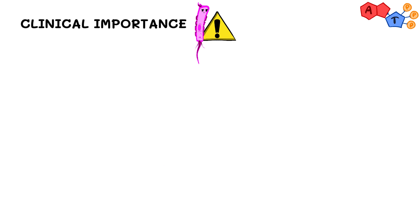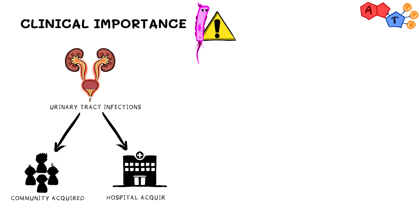Proteus primarily causes urinary tract infections that are both community and hospital acquired. And as we have explained before, Proteus exhibits some virulence factors such as the flagella, the fimbriae, and the ability to produce urease enzyme which turns the urine environment into an alkaline one, and thus facilitating the survival of the organism.